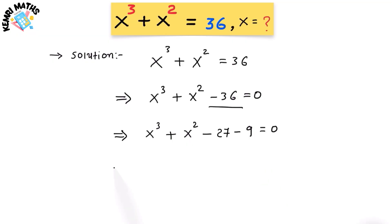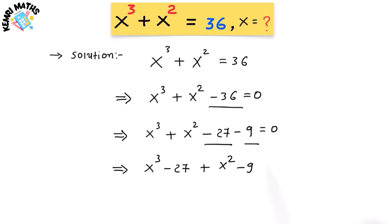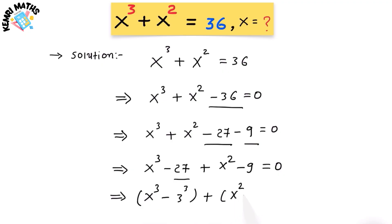Now let's put the cubic and square terms together: x³ − 27 + x² − 9 = 0. I'm going to rewrite 27 as 3³ and 9 as 3², giving us x³ − 3³ + x² − 3² = 0.